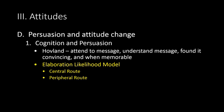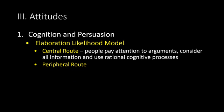How does cognition enter into the question of persuasion? The elaboration likelihood model, developed by Petty and Cacioppo, requires that you attend to a message, understand the message, find it convincing, and find it memorable. One problem we have now is that people don't even pay attention to messages that go against their current attitudes because those attitudes are so ingrained. The model includes both a central route and a peripheral route. The central route occurs when people pay attention to arguments, consider all information, and use rational cognitive processes.